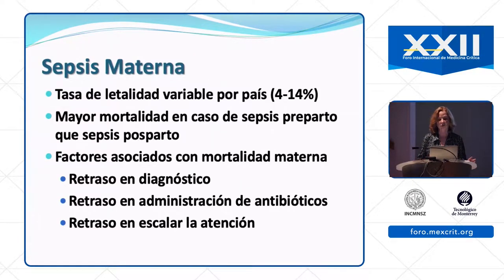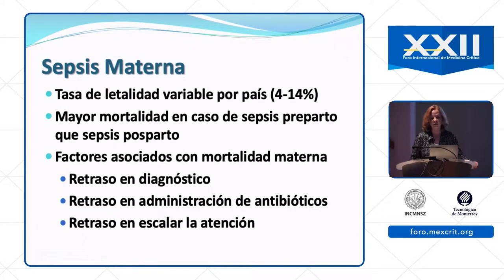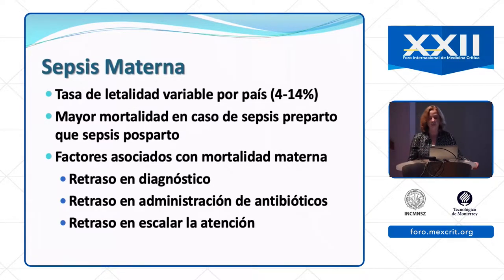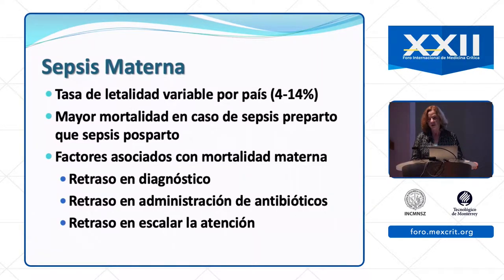The mortality rate from maternal sepsis varies widely by country — four to fourteen percent in the literature, but described as high as fifty percent in some reports. The greatest mortality is actually in sepsis that occurs before delivery, and about fifty percent of sepsis occurs before delivery. Studies on risk factors for death identify three common themes: delay in diagnosis, delay in administration of antibiotics, and delay in escalating care.